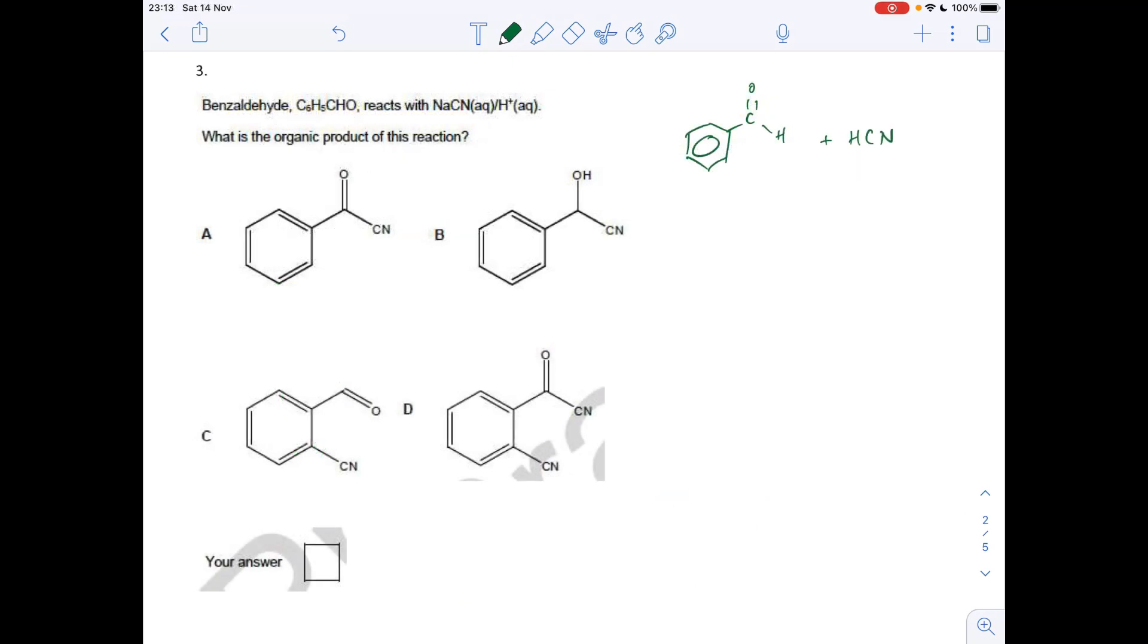Question 3. The sodium cyanide acid mixture is effectively reacting HCN with the benzaldehyde. So what's going to happen, if we think about the mechanism, the CN minus ion is going to attack that slightly positive carbon. It's going to repel the pi electron pair up onto the O, so that's going to generate this intermediate here. So it'll be an O minus, the CN, the H.